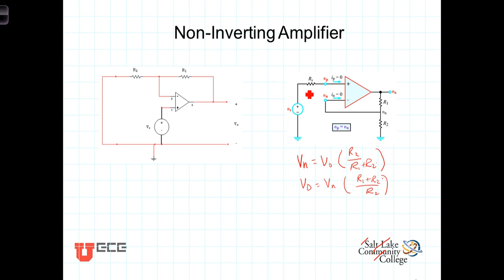Now what is V sub P? Using another op amp approximation that the current going into the input terminals is 0, therefore I sub P is 0, there will be no voltage drop across V sub S because the current going through it is 0, so V sub P is in fact just our source voltage V sub S.